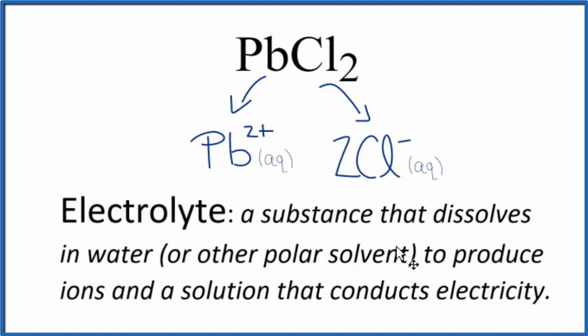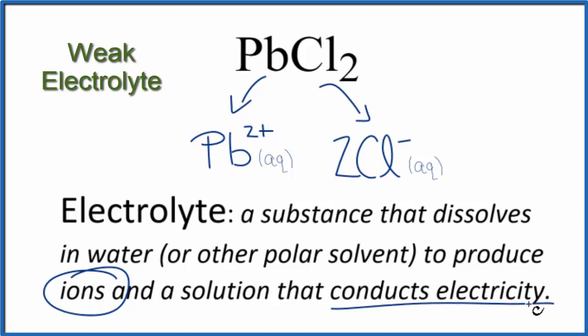So for that reason, it will be an electrolyte because we have these ions in water. But not many ions are in the water since it's only slightly soluble. So it'll conduct, but not much. We call this a weak electrolyte.